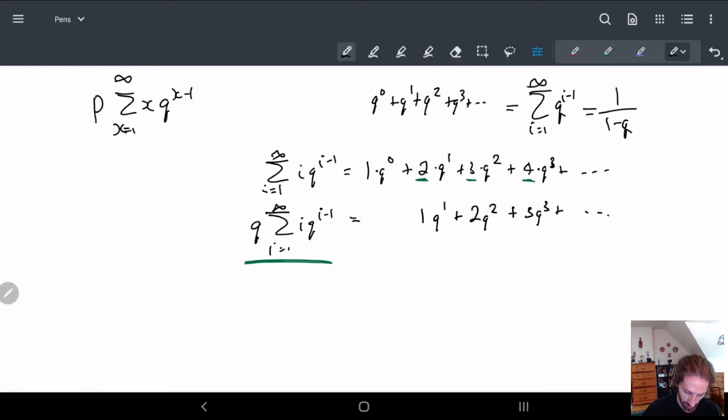And here if you notice this is just the previous one multiplied by Q, so this is basically where I had this idea. And so if I take this first one and I subtract the second one I get 1 minus Q times everything inside, is equal to 1 over 1 minus Q.